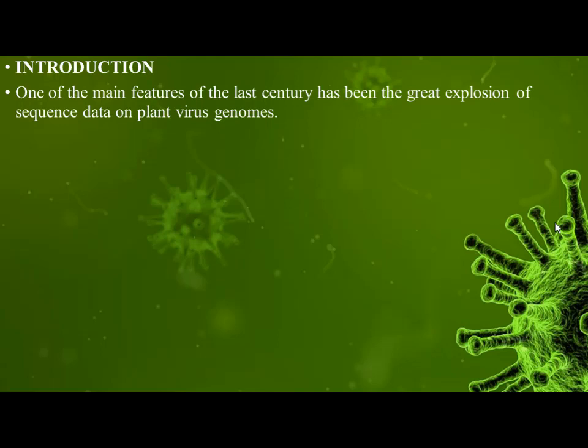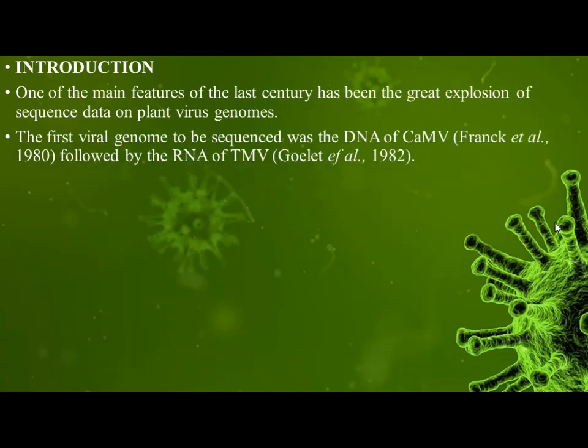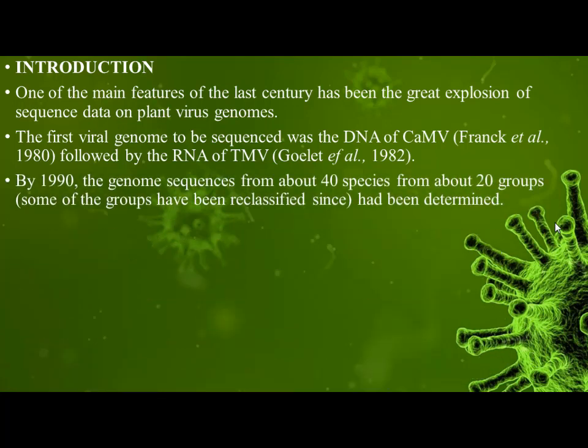The first viral genome to be sequenced was the DNA of CaMV by Frank et al., 1980, followed by the RNA of TMV by Gillette et al., 1982. By 1990, the genome sequences from about 40 species from about 20 groups had been determined.